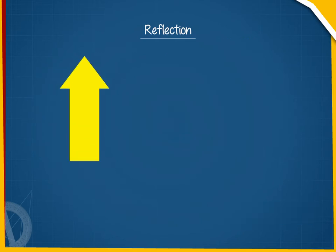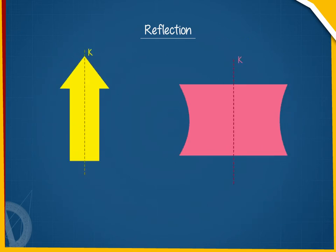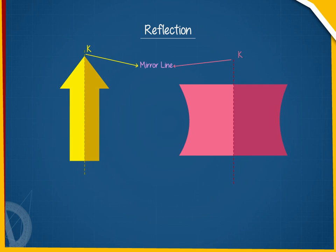Observe these figures. Here, K is the mirror line and the portion of the figure on the right side of the line is the image of the left portion of the figure.